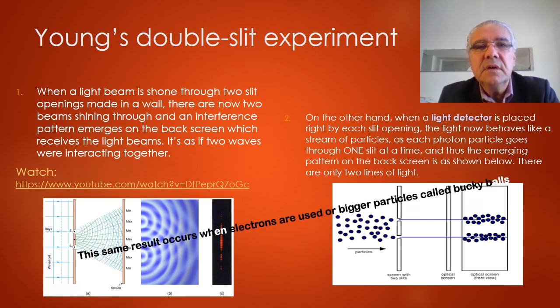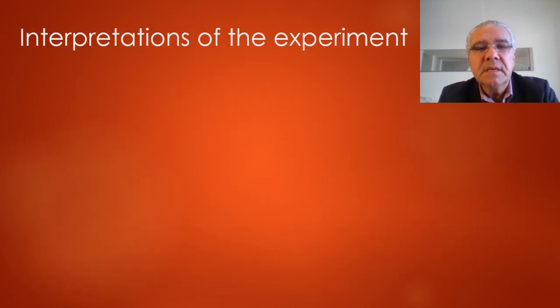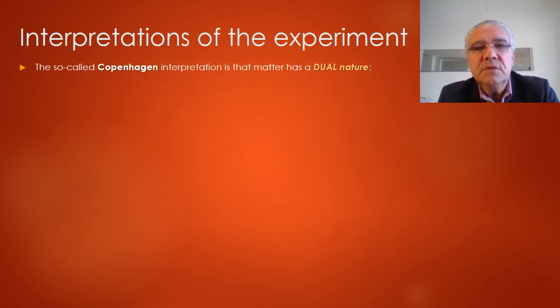This outcome is also verified for other types of particles like electrons or bigger particles called buckyballs. So what are the interpretations of this very famous experiment? Well, the dominating interpretation these days is called the Copenhagen interpretation, and it says that matter has a dual nature.